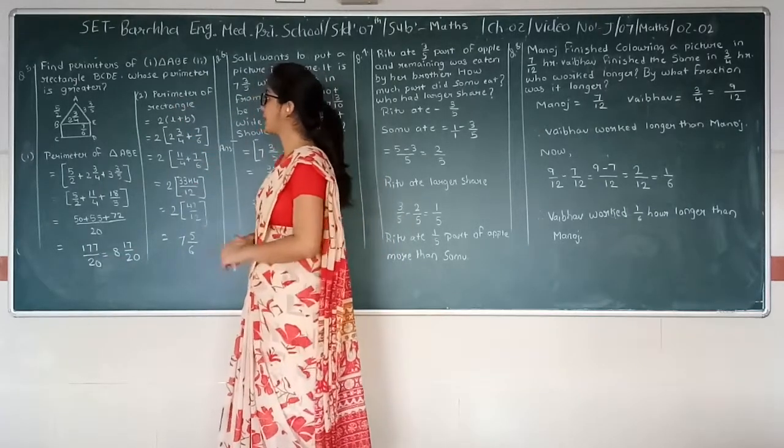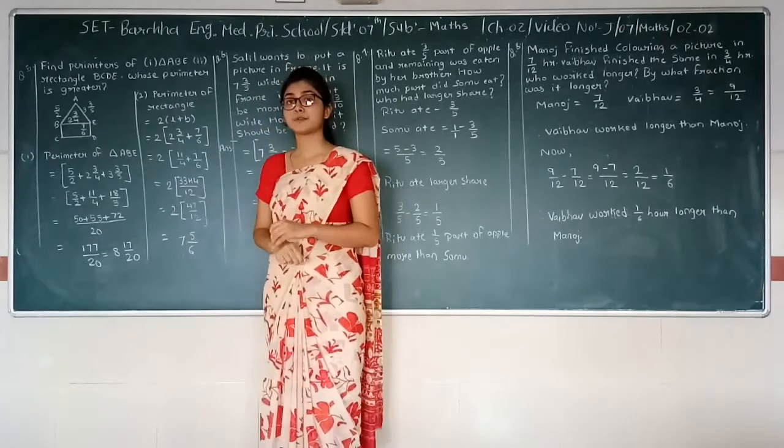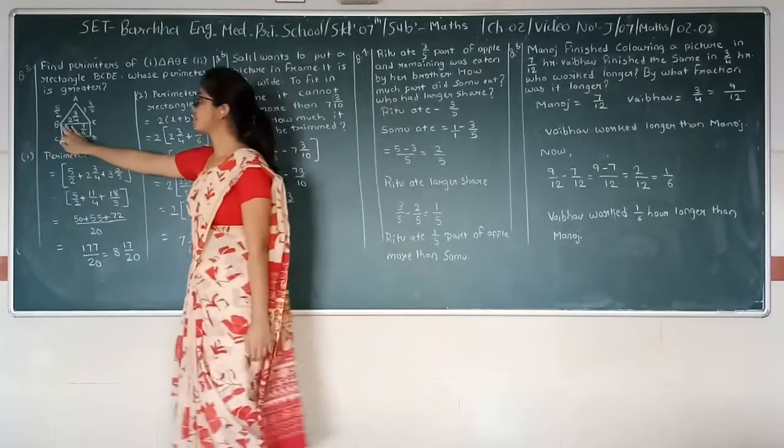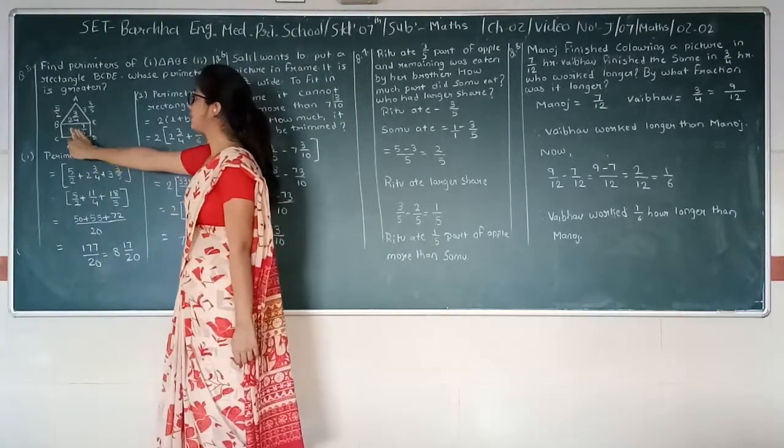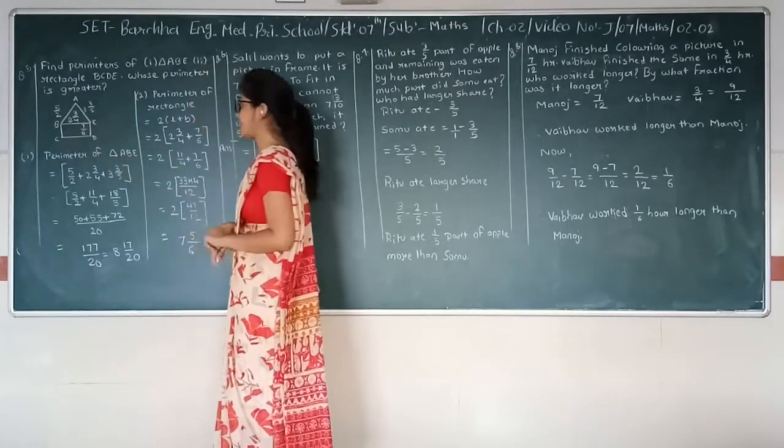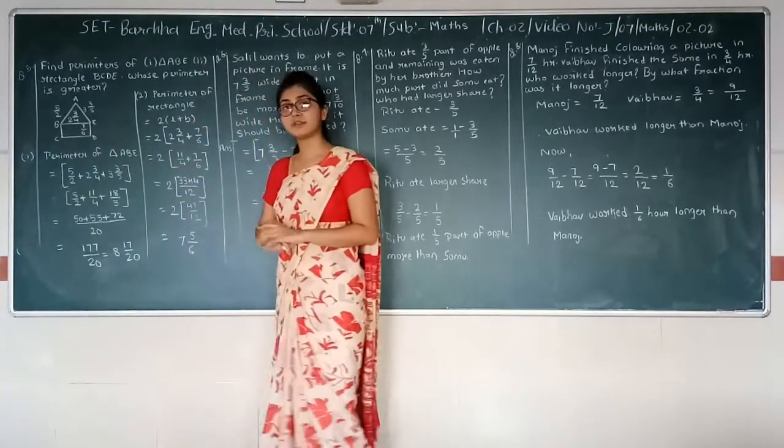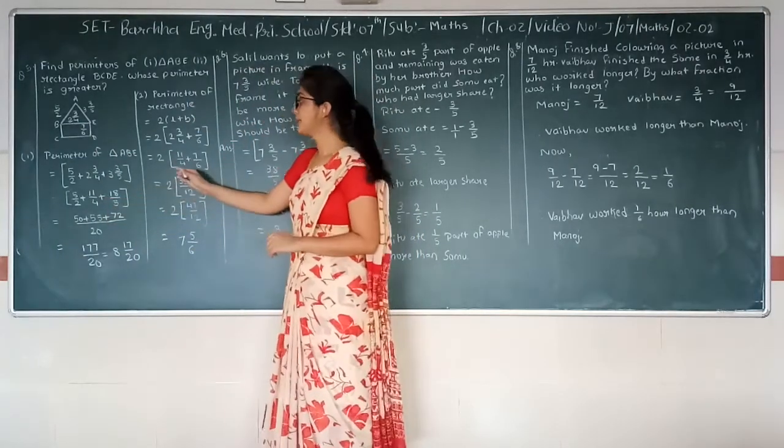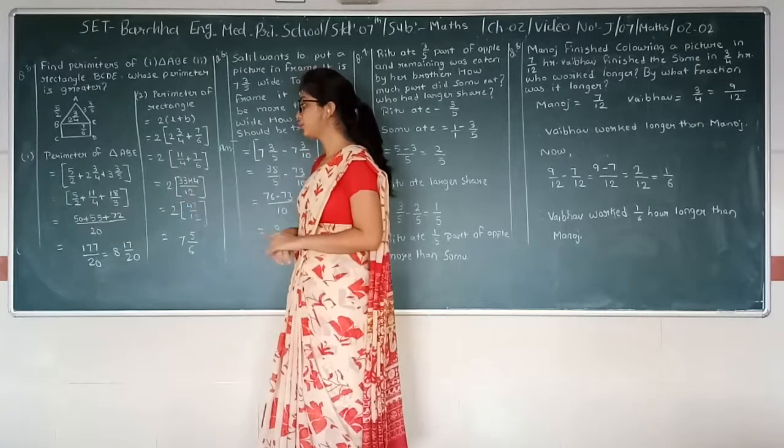Next one, perimeter of rectangle. Perimeter of rectangle's formula is 2 into l plus b. Now this is the rectangle for which length is equal to 2 integer 3 upon 4 and breadth is 7 upon 6. We have to convert this mixed fraction into improper. We have done this over here so we will write it as 11 upon 4.